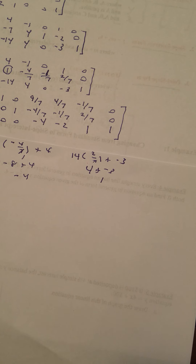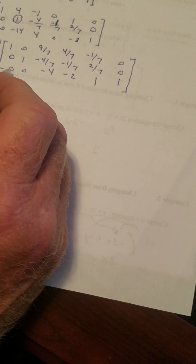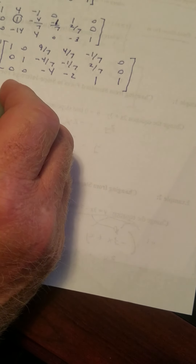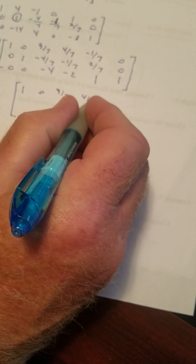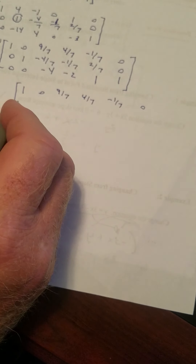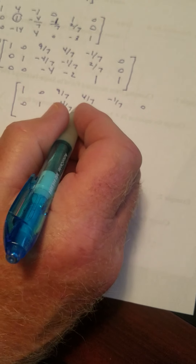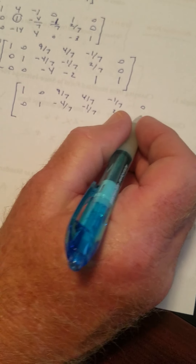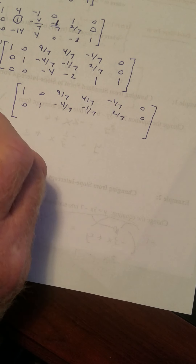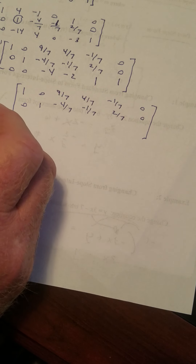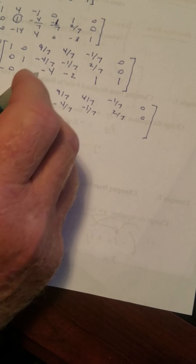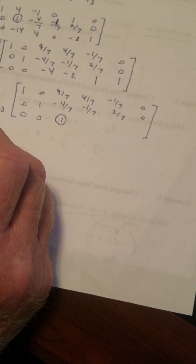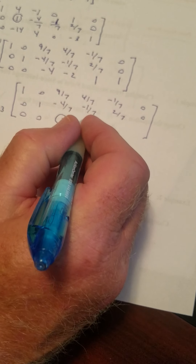Next step: I've got to get a 1 where the -4 is. These two columns are done. I've got to get 1s on the diagonal, so the top row stays the same, the second row stays the same. To get a 1 here, we're going to multiply by the reciprocal — that's -1/4 times row 3. -1/4 times 0 is 0. -1/4 times 0 is 0. -1/4 times -4 is 1. -1/4 times -2: the negatives drop out, that's 2/4, so one-half. -1/4 times 1 is -1/4. -1/4 times 1 is -1/4.